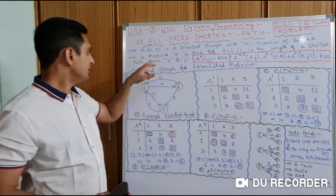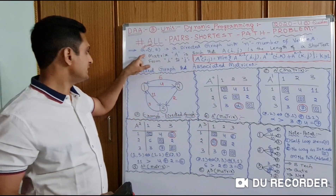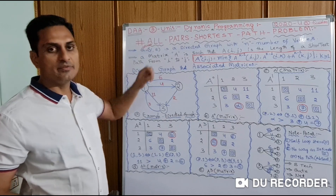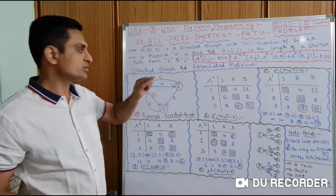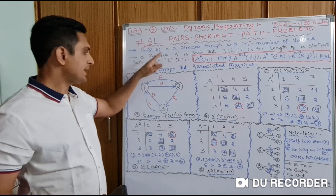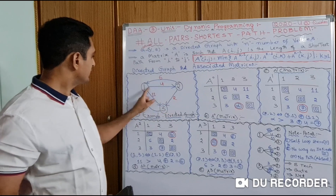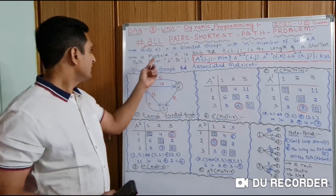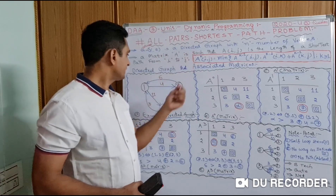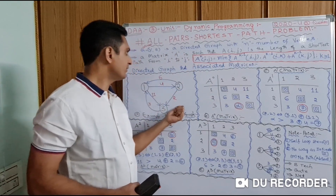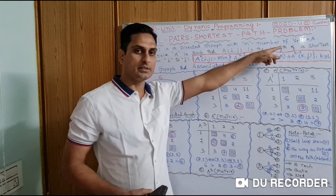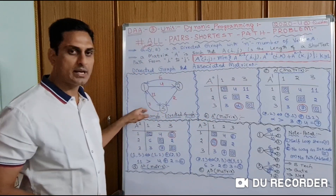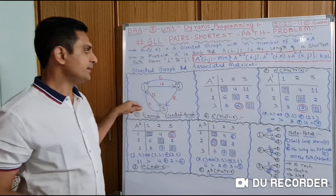As I told in the previous video, G is a graph. V stands for vertices or nodes, and E stands for edges. Here, 1, 2, 3 are vertices — nodes. This is a directed graph. We need to take a directed graph with n number of vertices. In the textbook, 3 vertices are given.